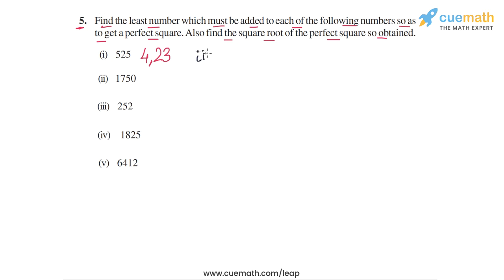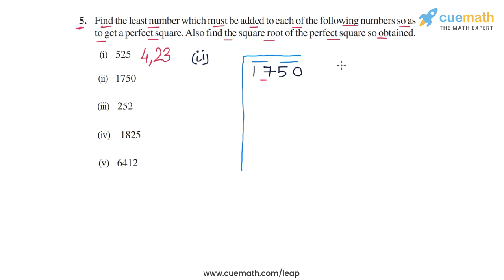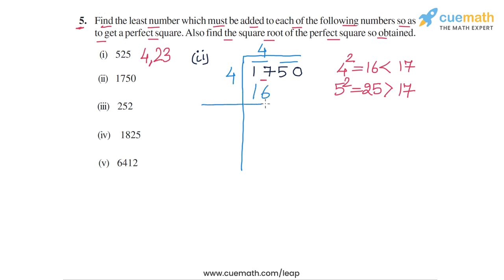Now for part 2, the number is 1750. We apply the division method — putting bars over 50 and 17. In the first step, the largest digit whose square is ≤ 17 is 4, because 4² = 16 < 17, while 5² = 25 > 17. So the first divisor and first quotient digit are both 4. 4 × 4 = 16. Subtracting: 17 − 16 = 1. Bringing down 50, we get 150 as the dividend for the next step.